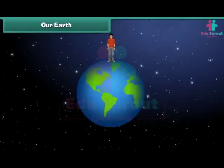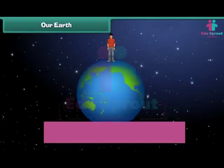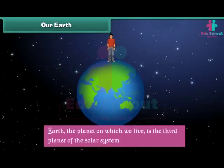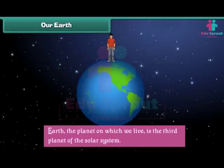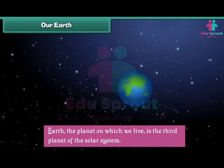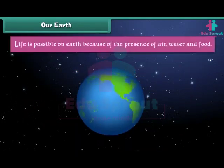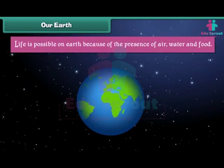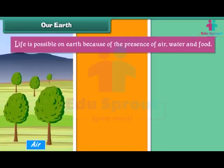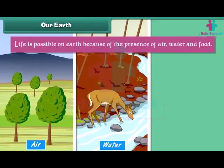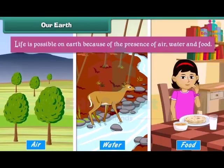Earth, the planet on which we live, is the third planet of the solar system. Life is possible on earth because of the presence of air, water and food.